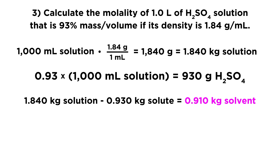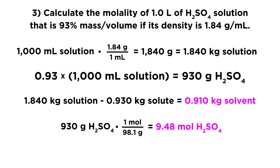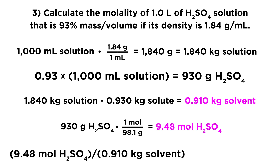Those are the two components in solution. Now that we have the mass of solute, we convert 930 grams of sulfuric acid using 1 mole over 98.1 grams, giving 9.48 moles. We have the moles of solute and the kilograms of solvent — just the solvent itself, not the total solution. So 9.48 moles divided by 0.91 kilograms gives a 10.4 molal solution.